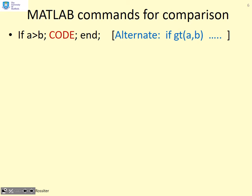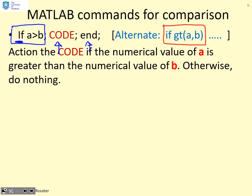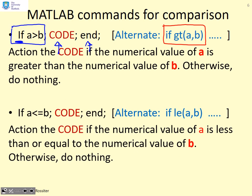In MATLAB, the if statement works simply: write 'if a > b', then the code immediately after that if statement is performed, and 'end' tells MATLAB you have finished. So the code between the if statement and the end statement is what gets implemented. Alternatively, you can write 'if gt(a, b)' which also means if a is greater than b. If the condition is not true, the code will do nothing. Another example: 'if a <= b', or equivalently 'if le(a, b)'.